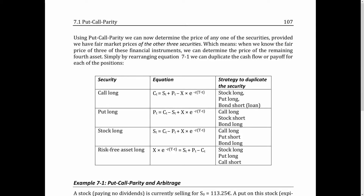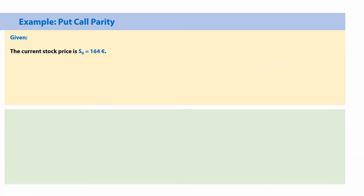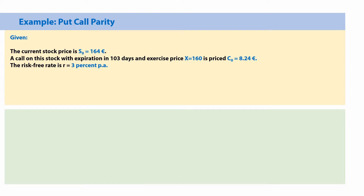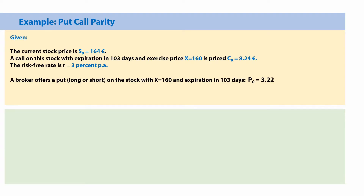Let's see how that works with an example. The current stock price is 164 euros. We have a call expiring in 103 days with an exercise price of 160, priced at 8.24 — already in the money. The risk-free rate is 3% per year. A broker offers a put on the same stock with an exercise price of 160, expiration in 103 days, at a price of 3.22. We need to analyze whether something is wrong with the price of that put, or if there are arbitrage opportunities.